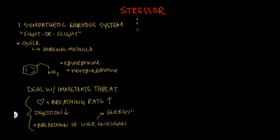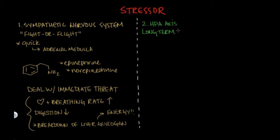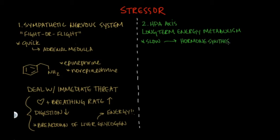The second stage of the stress response is the activation of the HPA axis. One of the primary effects of the HPA axis is modulating our long-term energy metabolism. It's slower to activate than the fight-or-flight response — typically on the order of hours — because unlike the adrenal medulla that has hormones ready in vesicles, the adrenal cortex has to synthesize new cortisol every time it's activated, so it takes some time.